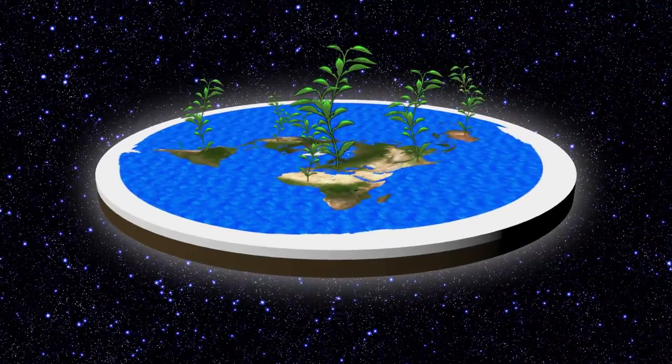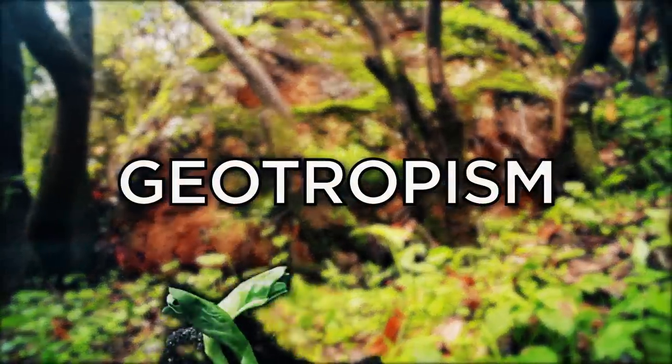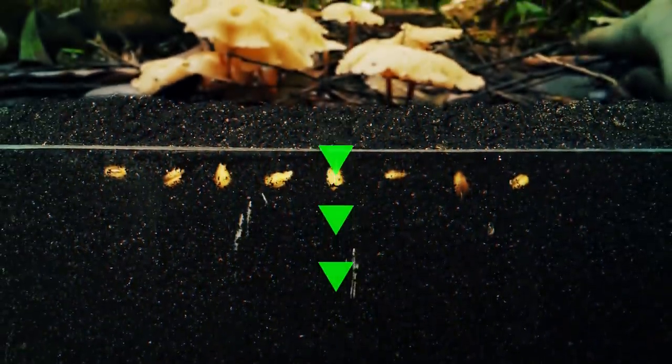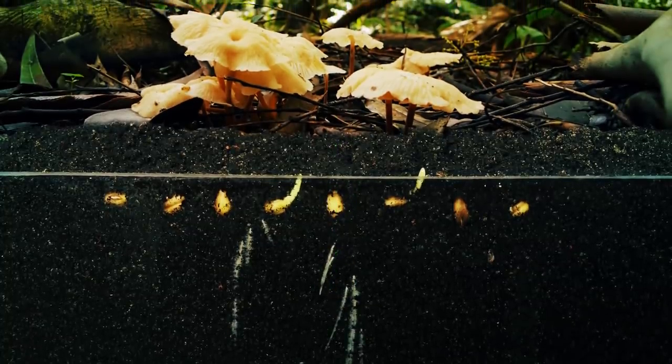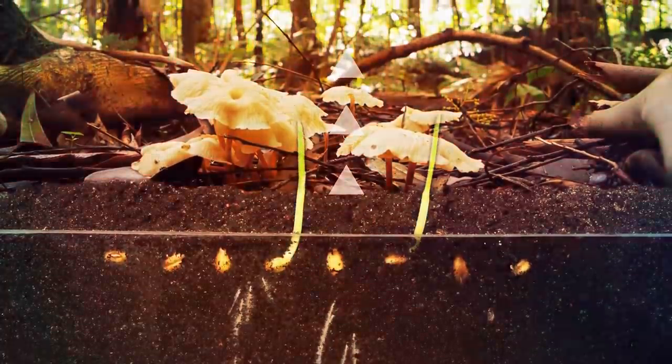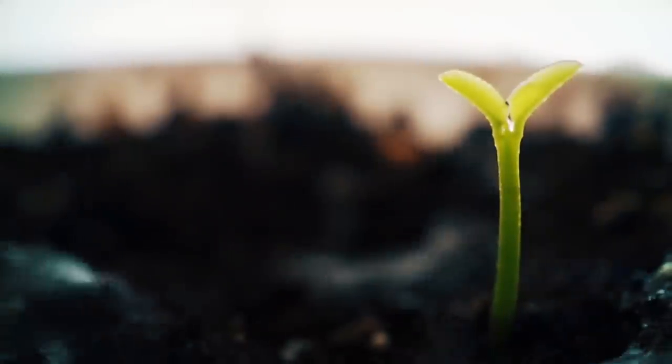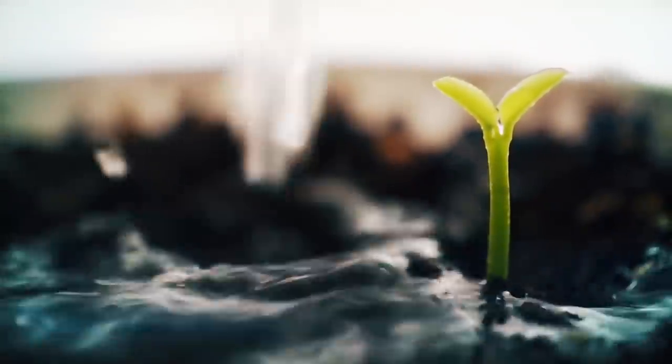Plants would also grow quite differently on a flat Earth. Trees are able to survive thanks to a process known as geotropism or gravitropism. Their roots anchor them into the ground by growing in the direction of the strongest gravitational pull, and their stems grow in the opposite direction. This ensures that they are able to draw water from the ground and absorb sunlight for photosynthesis.